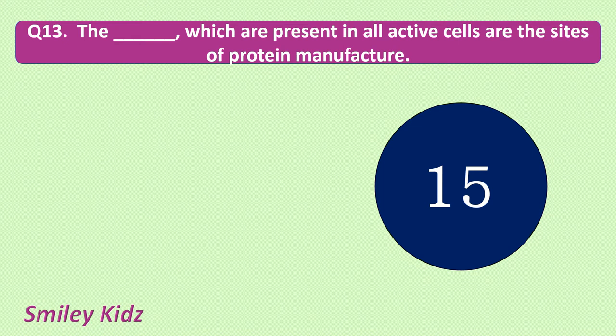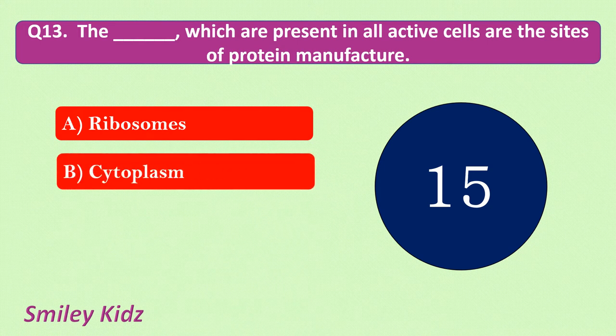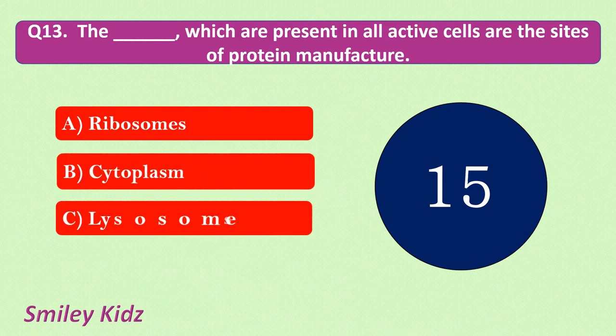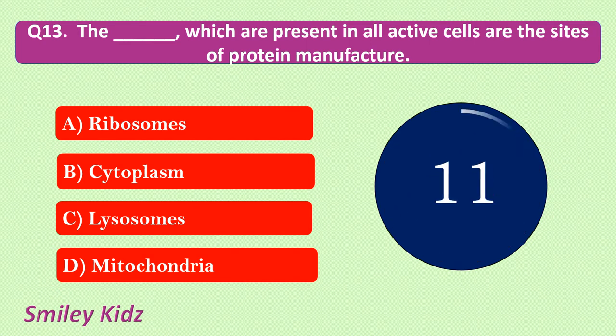Question number 13. The dash which are present in all active cells are the sites of protein manufacture. Your options are: ribosomes, cytoplasm, lysosomes, mitochondria. Your time starts now.